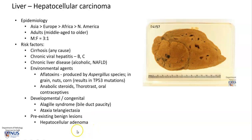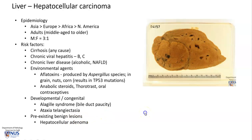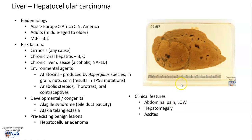In addition, pre-existing benign lesions such as hepatocellular adenoma can also, in a minority of cases, go on to develop hepatocellular carcinoma. Clinically, these patients may present with loss of weight, abdominal pain, hepatomegaly on examination, and ascites.